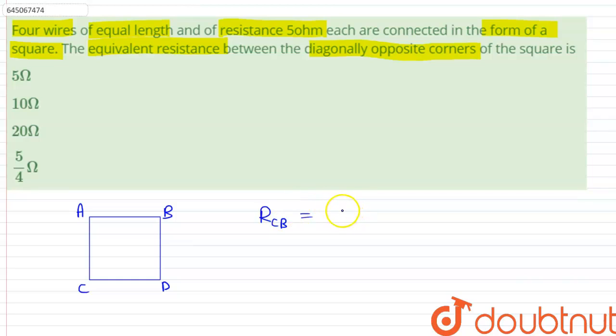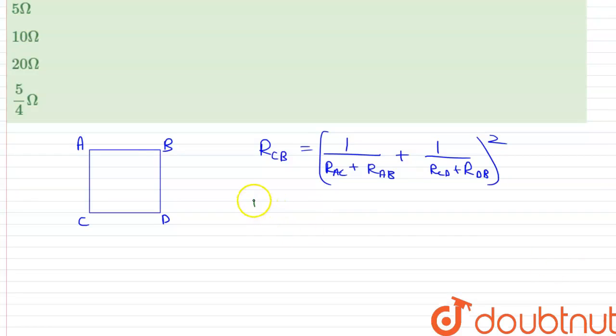Therefore, we can write that this will be equal to 1 upon R_AC plus R_AB, plus 1 upon R_CD plus R_DB, and the inverse of this.